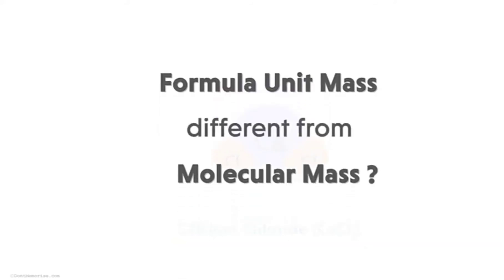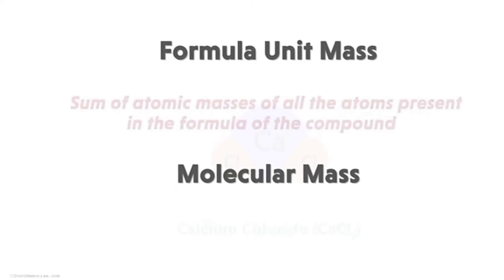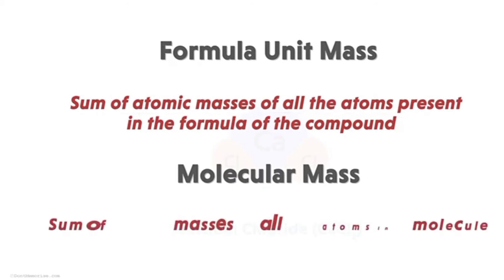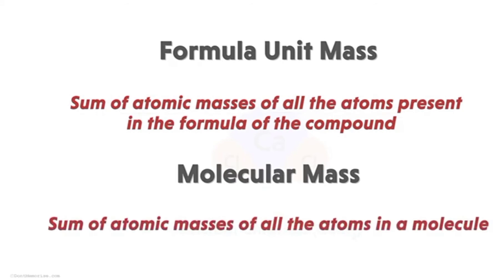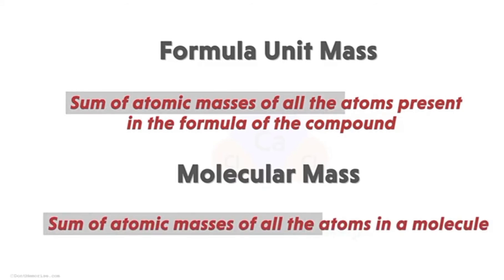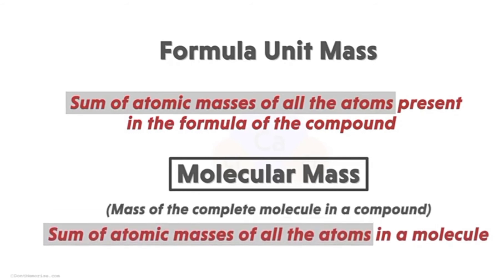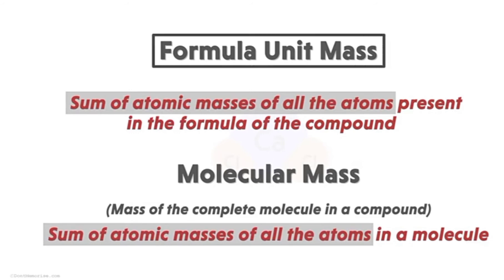Formula unit mass is defined as the sum of atomic masses of all atoms present in the formula of a compound. It is not very different from molecular mass, but the difference is that molecular mass refers to a complete molecule, while formula unit mass deals with compounds that dissociate into ions.